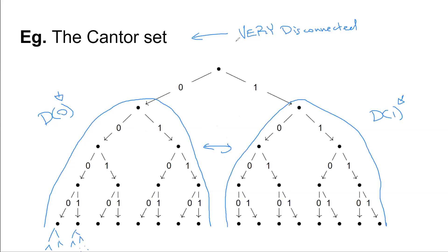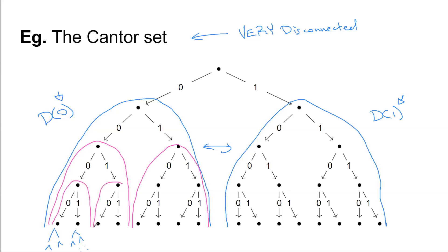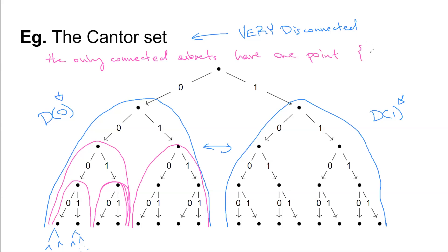What do I mean by very disconnected? Both of those open sets are themselves disconnected, and those open sets are also disconnected, and so on and so forth. The only connected subsets of the Cantor set are single points — sets with exactly one element. For instance, just the path that goes 1, 0, 1, 0, 1, 0, and so on is a connected subset.